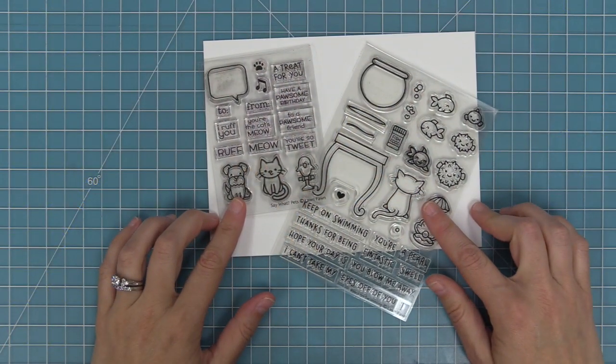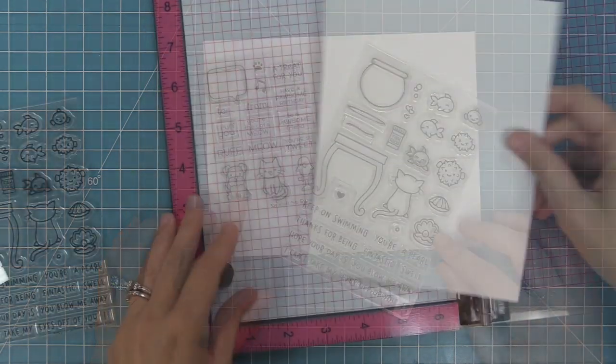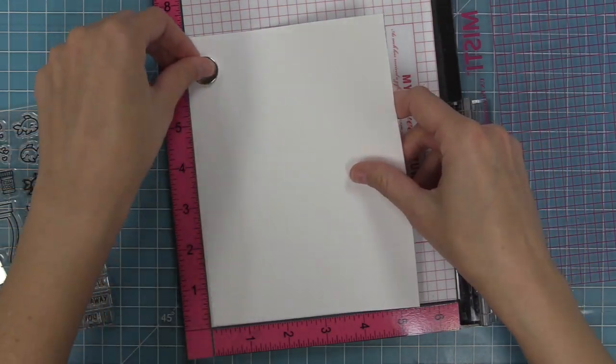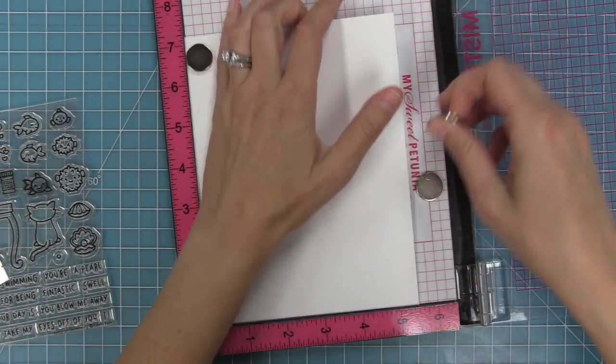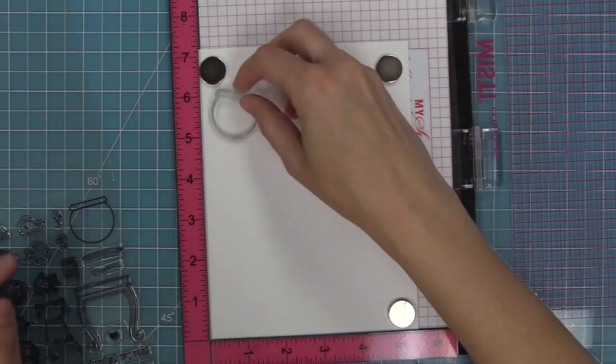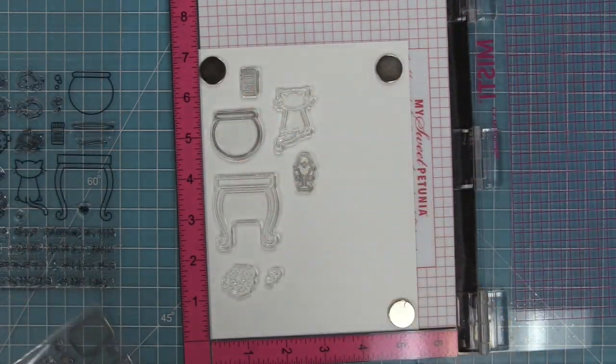Today we're going to be combining stamp sets to create a super cute scene and we're going to be altering one of these stamp sets too. These sets are some of my favorite new sets: Keep on Swimming and Say What Pets, and they work really well together for creating a scene.